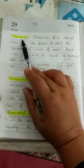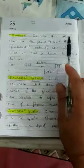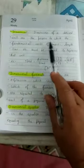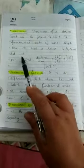So dimension means any derived unit. The dimension of any derived unit are the powers to which the fundamental units of mass, length, time, etc. must be raised to represent that unit.